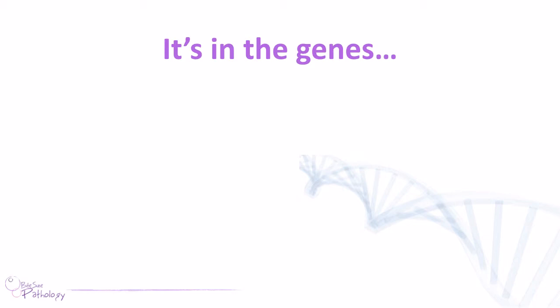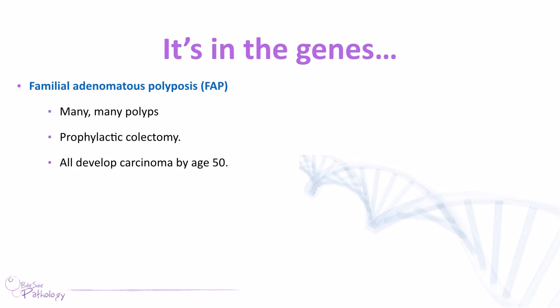Colorectal cancer does seem to be in the genes. The first important condition is familial adenomatous polyposis, or FAP, which predisposes you to making many, many polyps. It's due to a mutation in the APC gene — the adenomatous polyposis coli gene. This is where the two-hit hypothesis comes in: most affected people inherit a mutated APC gene, and then the second allele becomes mutated, leading to the full-blown condition. These people develop hundreds and thousands of polyps in the colon, and just over 90% will develop carcinoma by age 50. As a result, most will have a prophylactic colectomy.